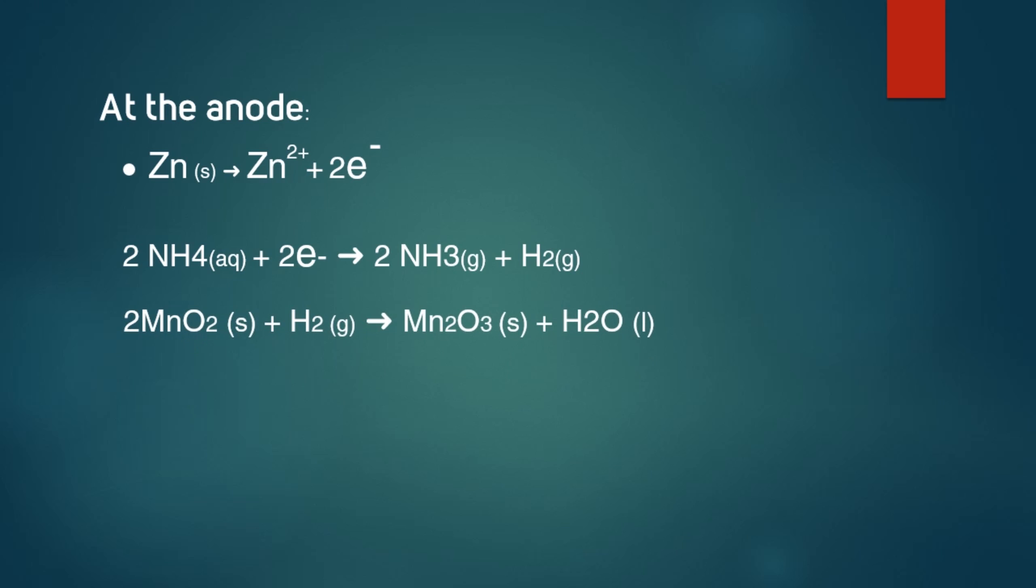The manganese dioxide MnO2 near the cathode reacts with hydrogen gas liberated to form manganese oxide Mn2O3 and water H2O.